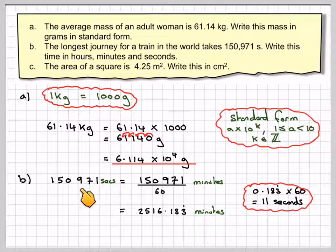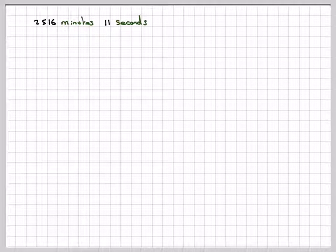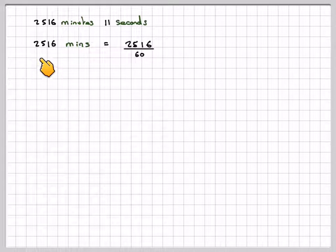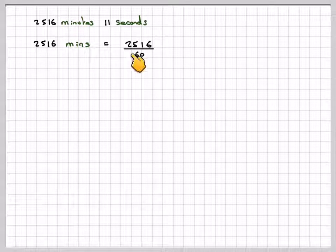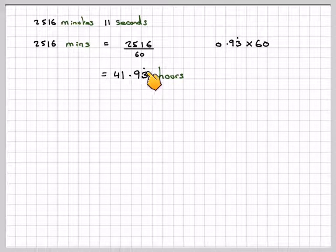So this time, 150,971 seconds is going to be 2,516 minutes and 11 seconds. Now I'm going to ignore the 11 seconds and just deal with the whole minutes which are left. In one hour there are 60 minutes, so those 2,516 minutes will be 2,516 divided by 60, which gives me 41.93 recurring hours. I need to deal with the part of an hour: 0.93 times 60, because 60 minutes make an hour, gives me 56 minutes.